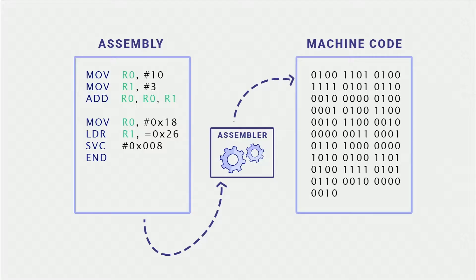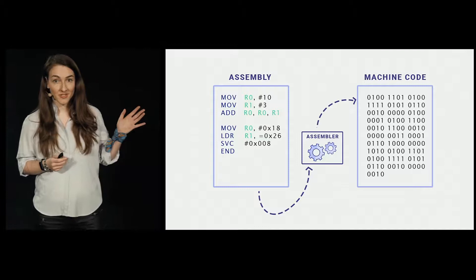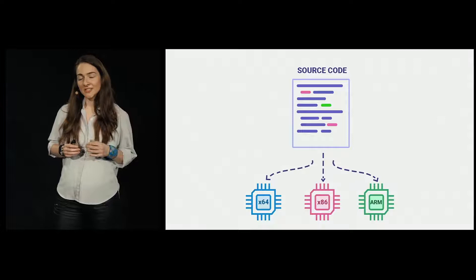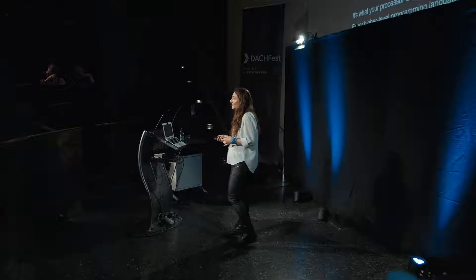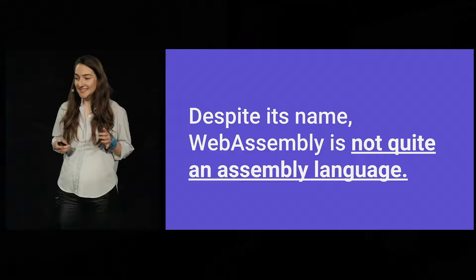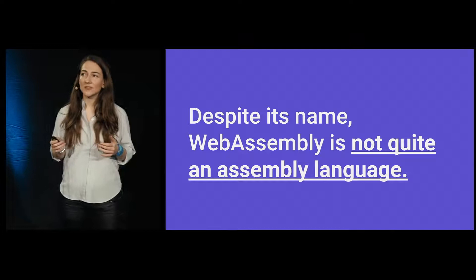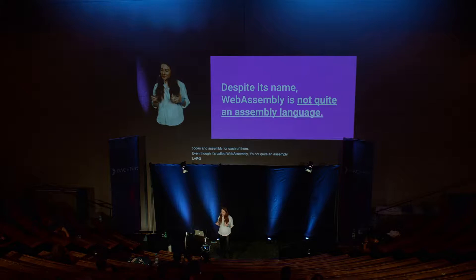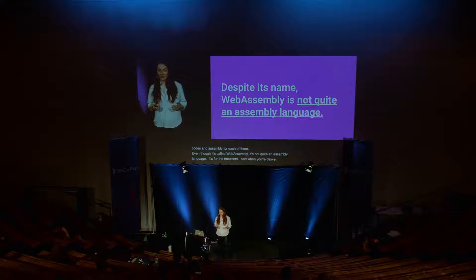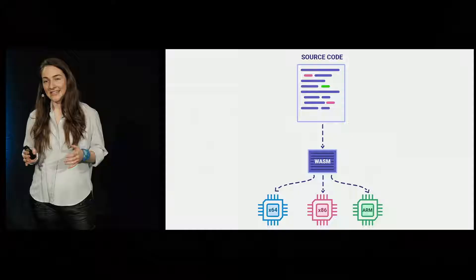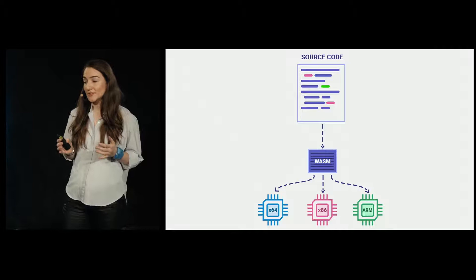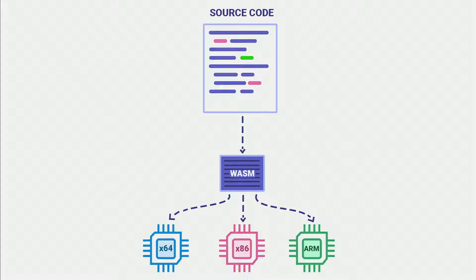Just so we're all on the same page, assembly typically refers to humanly readable languages that are similar to machine code. Machine code is what your processor understands — a bunch of numbers. Every higher-level programming language needs to get translated down to machine code in order to run on the processor. Different kinds of processor architectures need different machine codes and different kinds of assembly for each of them. Even though it's called WebAssembly, it's not quite an assembly language because it's not meant for any specific machine — it's for the browsers. And when you're delivering code to be executed in the browser, you don't know what kind of machines your code will be running on. So WebAssembly is the language for a conceptual machine that's the least common denominator of popular real-world hardware. When the browser downloads the WebAssembly binary, it can quickly turn it into any machine's assembly.